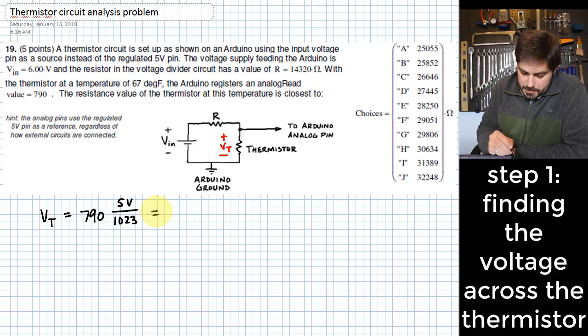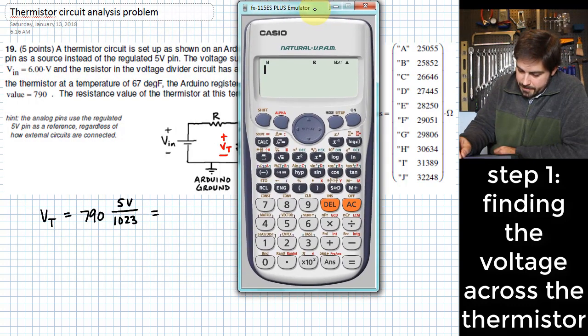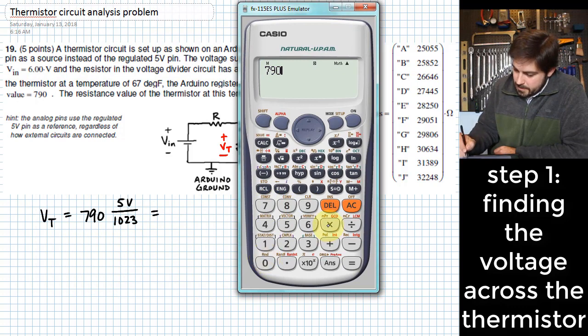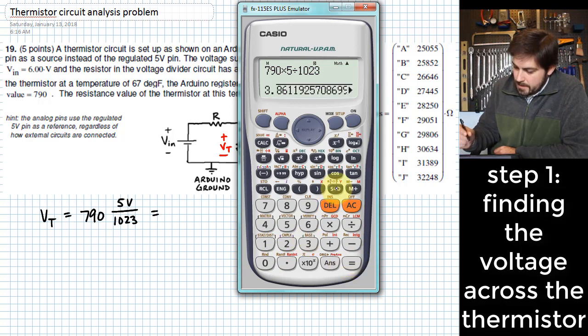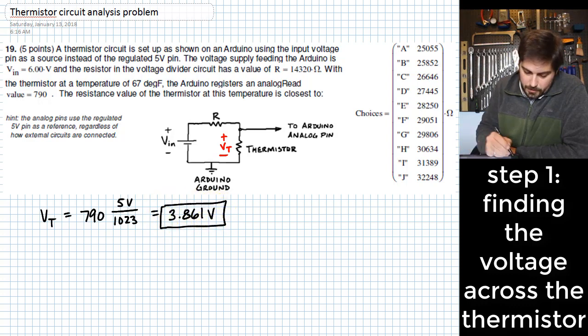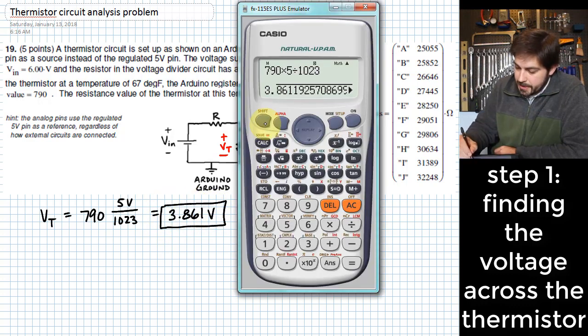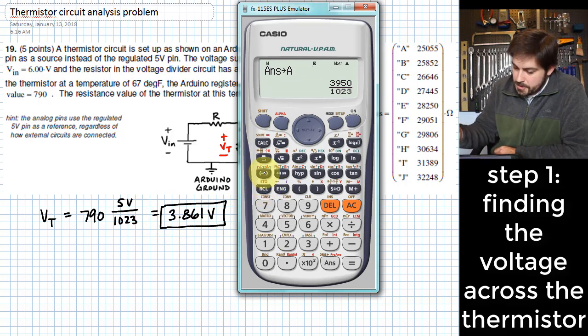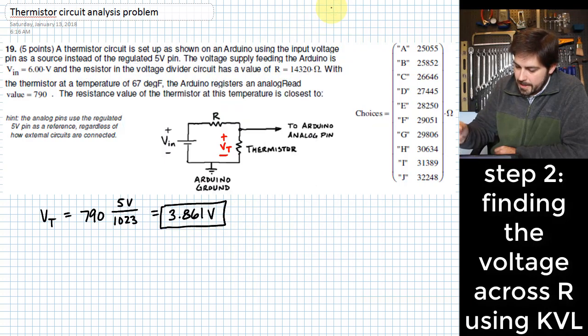Okay, so when we put these in here, we will have 790 times 5 divided by 1023, and that gives us 3.861 or so volts. One thing I'd like to do on the calculator is go ahead and store that into a variable, just store that into A, because I'm going to probably need it in just a minute.